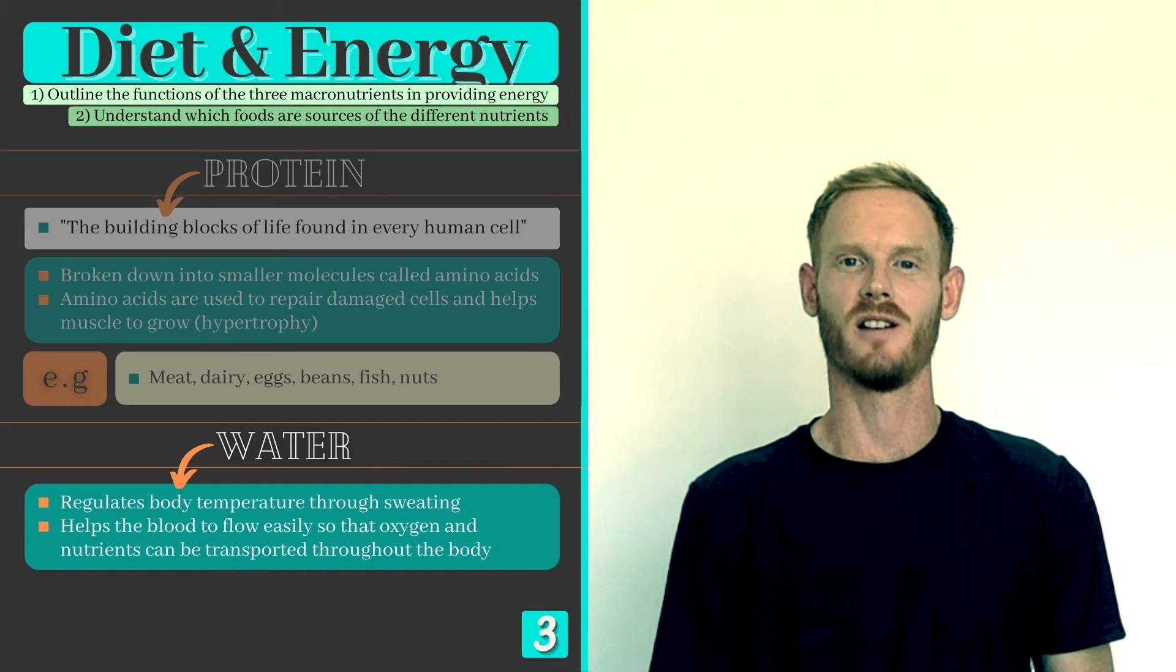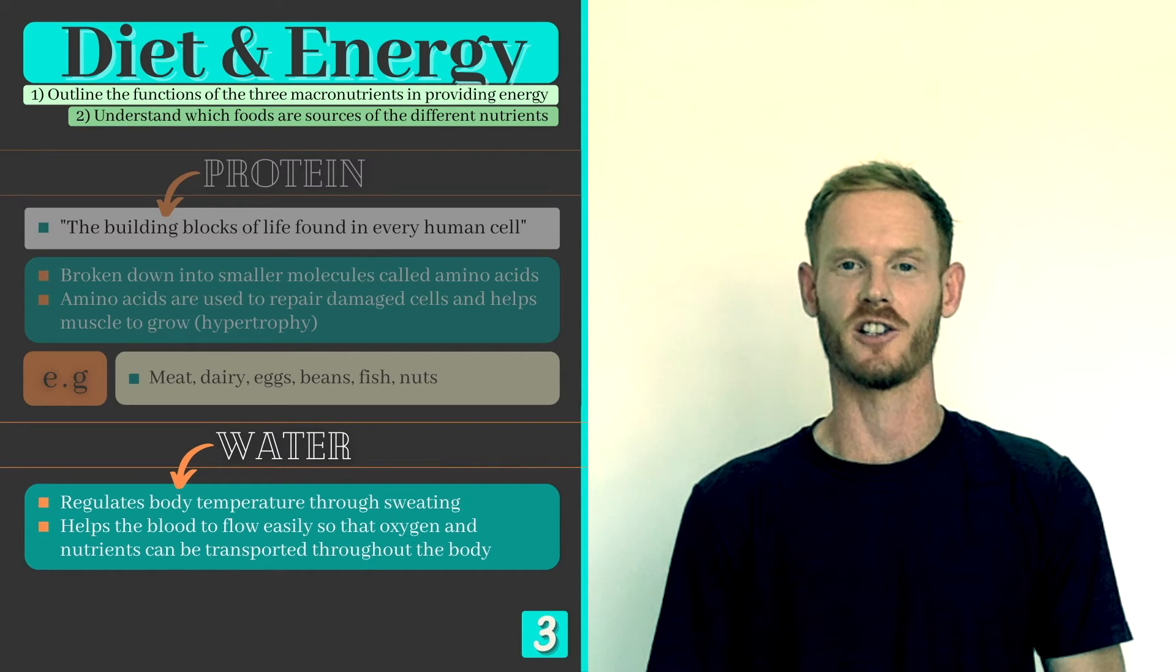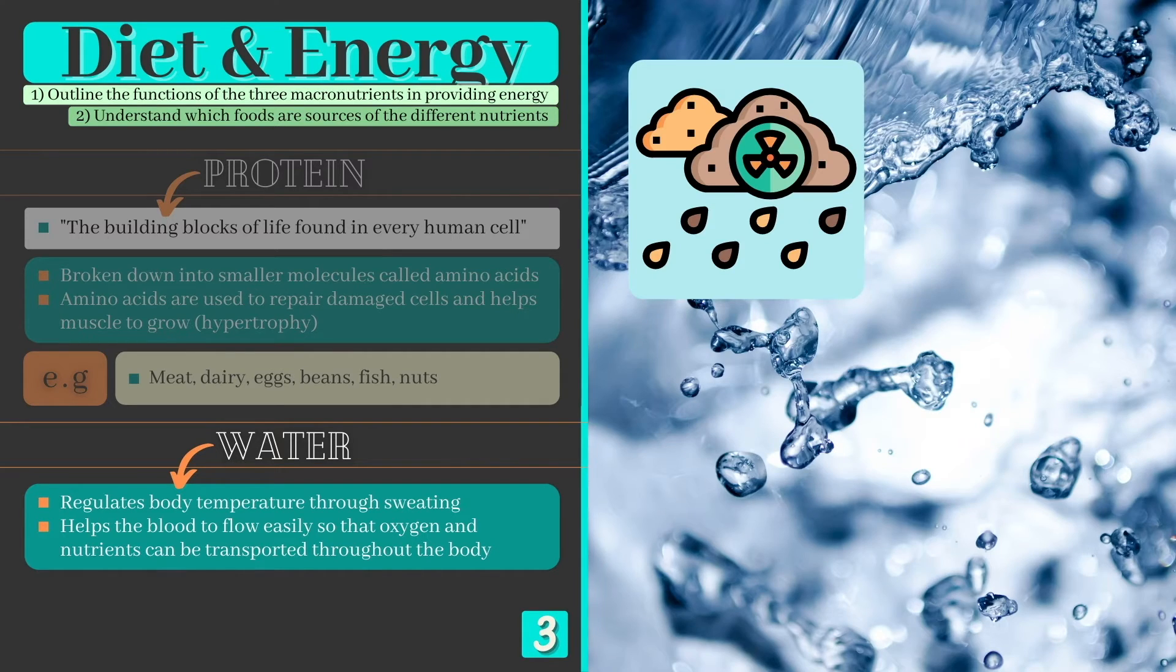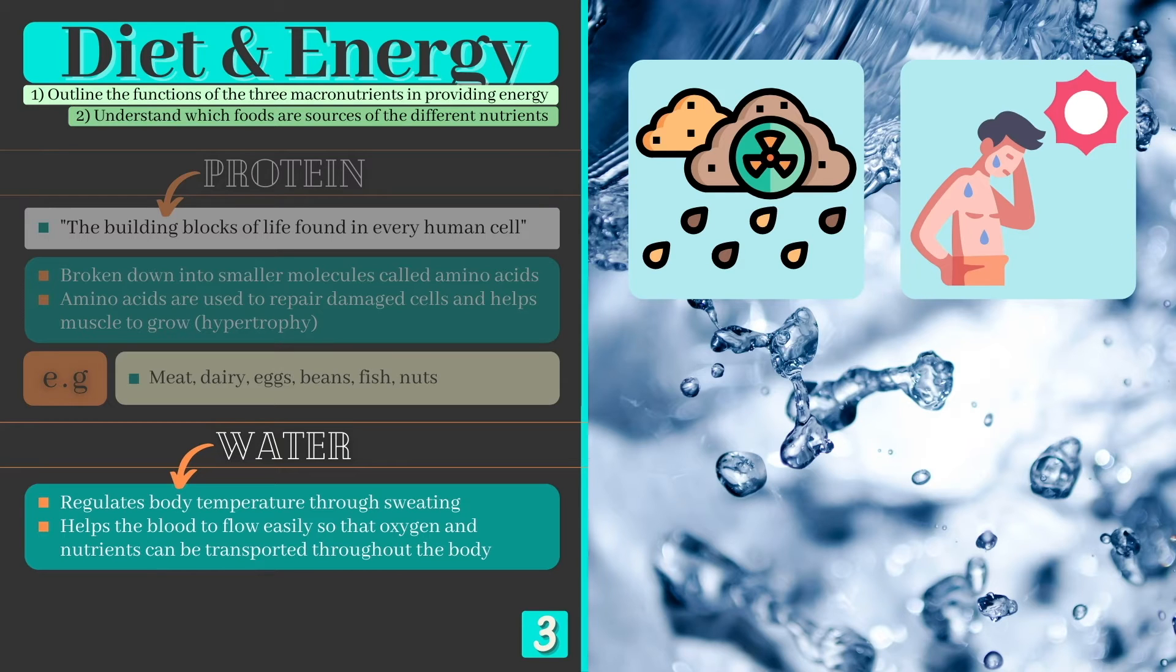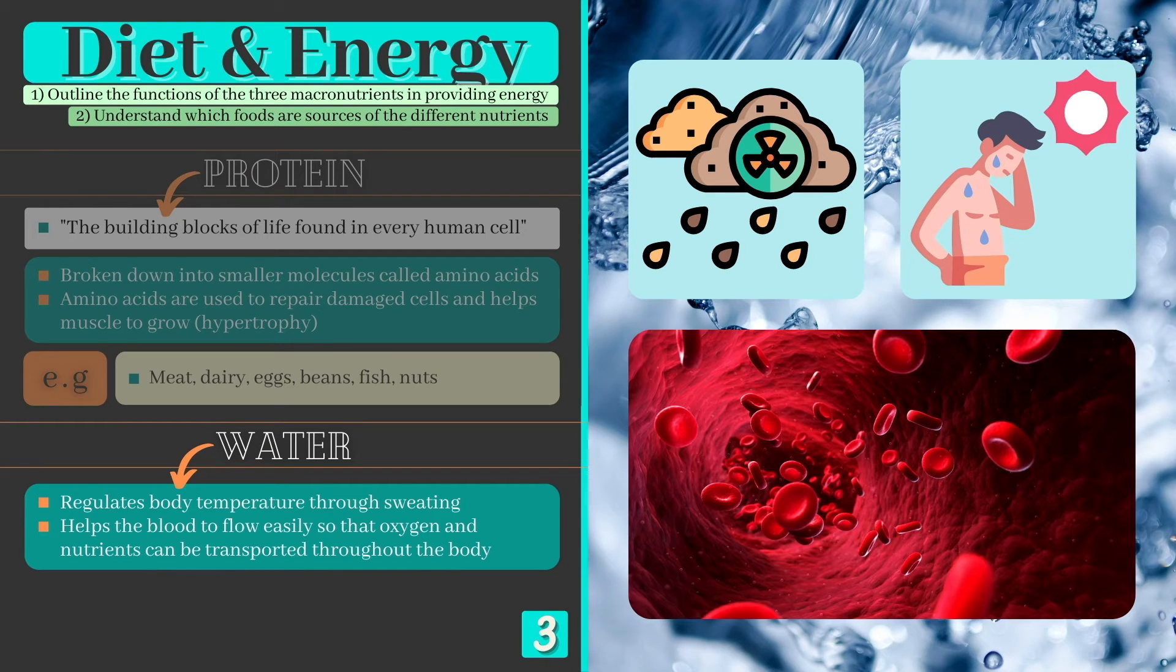Our final macronutrient is water which has a number of important functions. It assists in removing waste products from the body, helps to regulate body temperature and is the main component of blood, making it responsible for transporting oxygen and other nutrients.